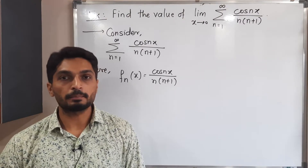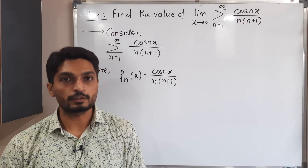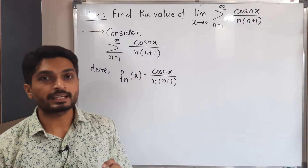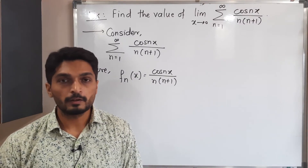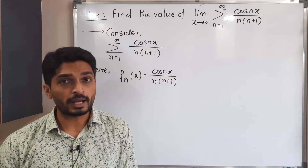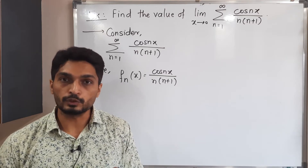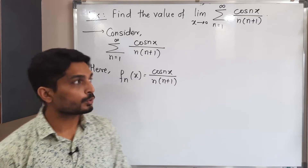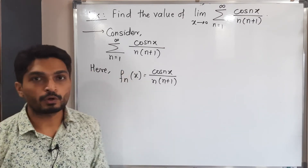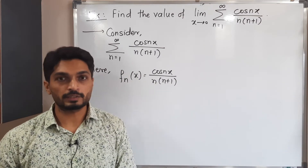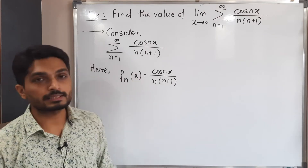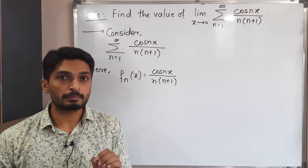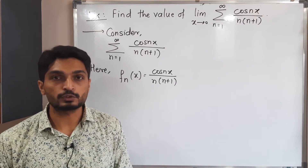Let us discuss this example of a series of functions. We have to find the value of the limit as x tends to zero of that series. Our first target is to prove that the series converges uniformly, and then we will find the value of that limit. The given series has f_n(x) equal to cos(nx) upon n(n+1). We are going to use the Weierstrass M-test to prove that it converges uniformly.